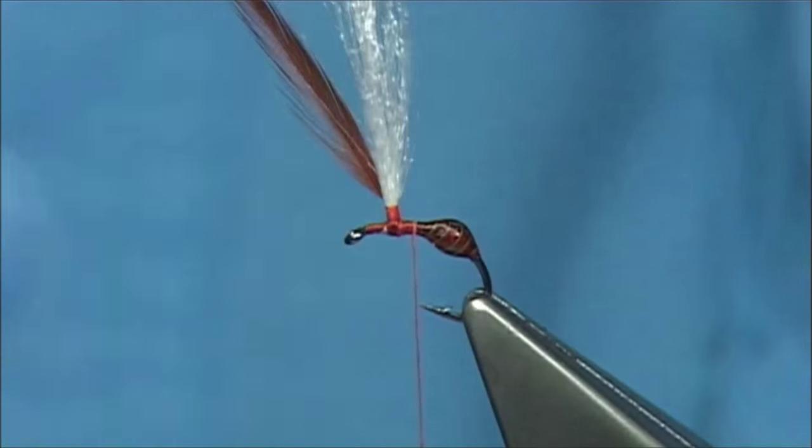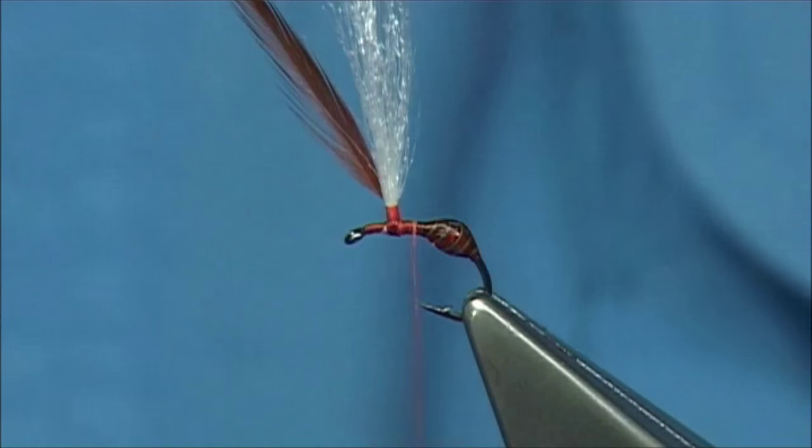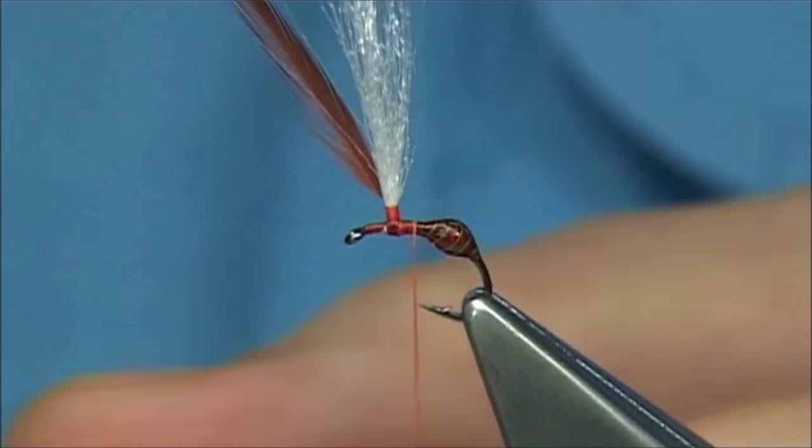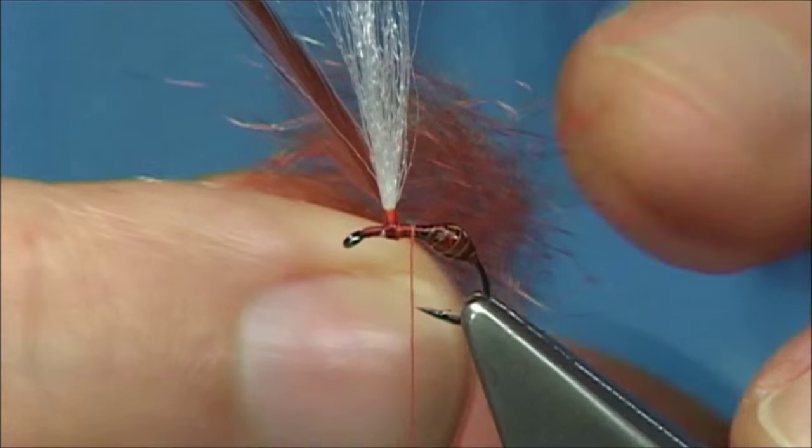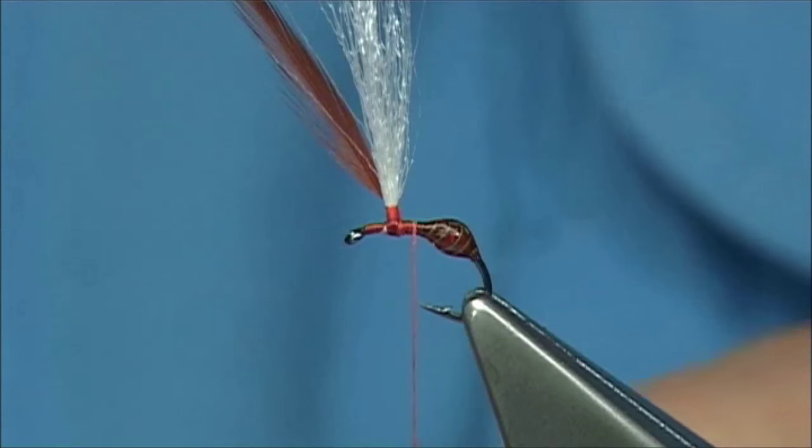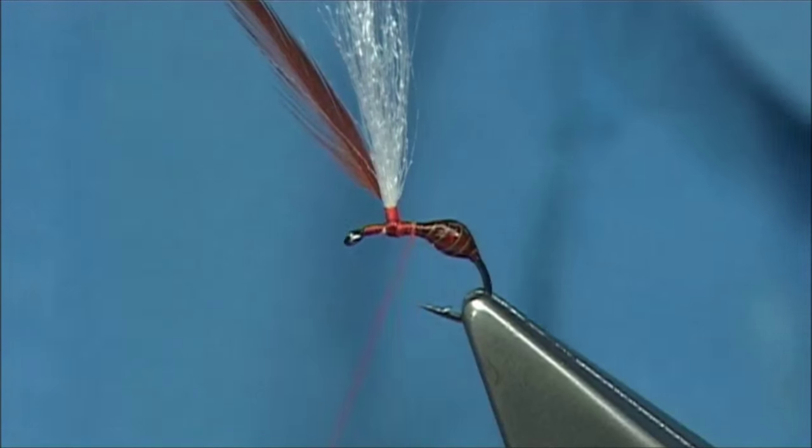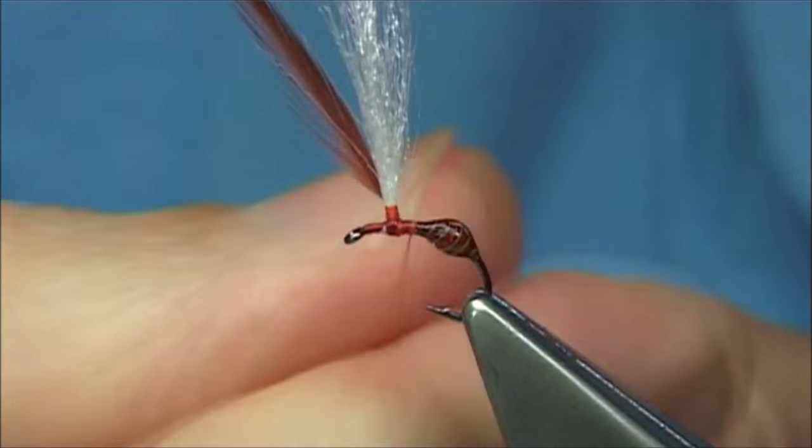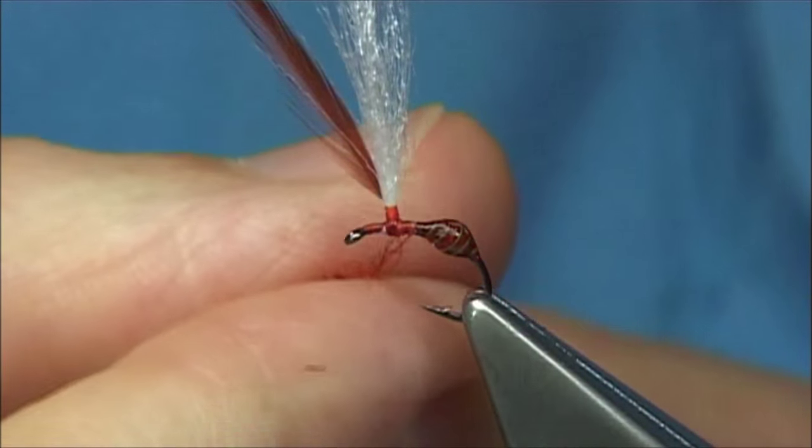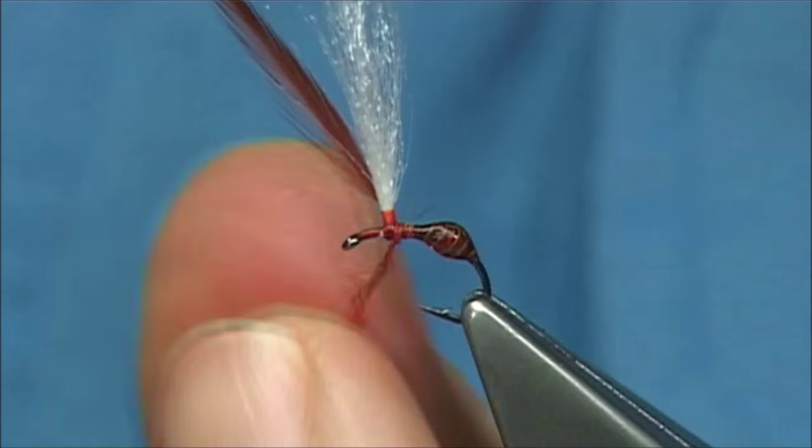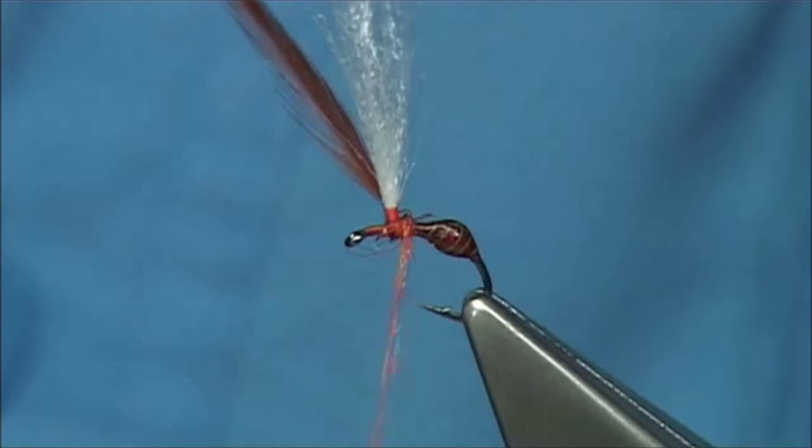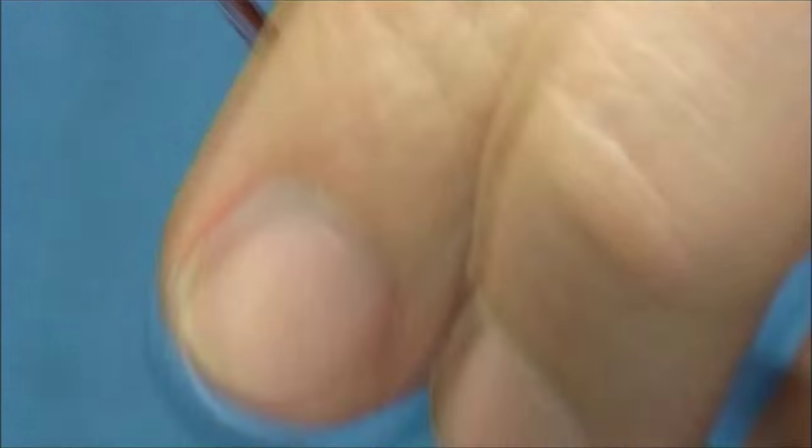Now I'm going to put a tiny bit of dubbing in. Dubbing could be anything really, obviously something similar to the color that you're tying. This is a fiery brown color here, this is the fiery brown, the SLF I'm using. Catch a tiny bit, just a drop onto the thread, run it up. You're forming the front, the thorax part of the fly. Then bring the thread to the front.